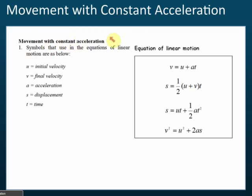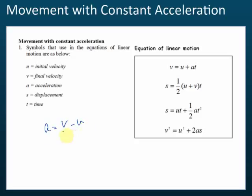For motion with constant acceleration, we have four equations. Here, u is initial velocity — the velocity at the very beginning of the motion. v is final velocity, a is acceleration, s is displacement, and t is time. Since acceleration equals change in velocity divided by time, rearranging gives a·t = v − u, and therefore v = u + at. That's the first equation.